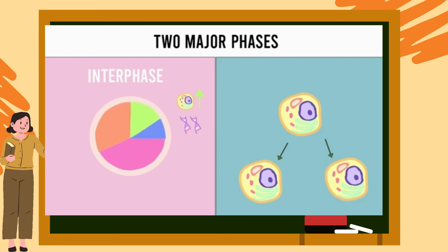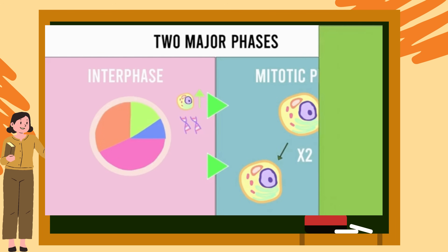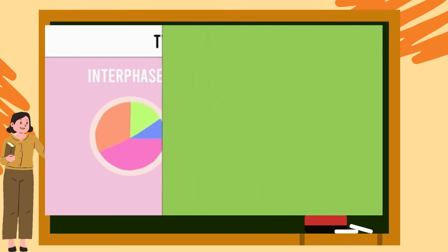Once certain conditions within the cell are met, which we will be discussing later in this video, the cell cycle moves on to the mitotic phase, where the duplicated DNA and the cell contents are divided and the cell ultimately splits itself into two daughter cells.